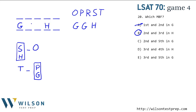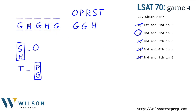Let's check the others to make sure nothing's wrong with them. If the second and fifth were in G, we'd end up with H's in the third and fourth spot — that seems fine. D says third and fourth in H, which is exactly what we have there. E says third and fifth are G, so we'd have an H in the second spot — I don't see what would be wrong with that. So B must be false.